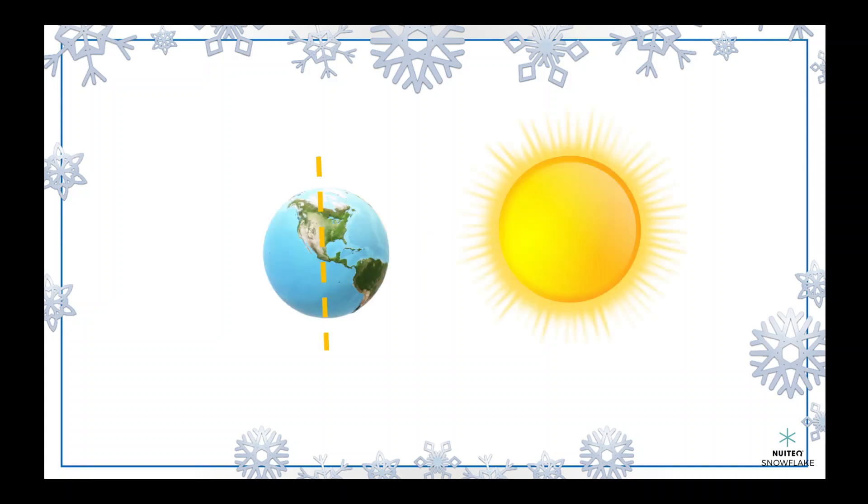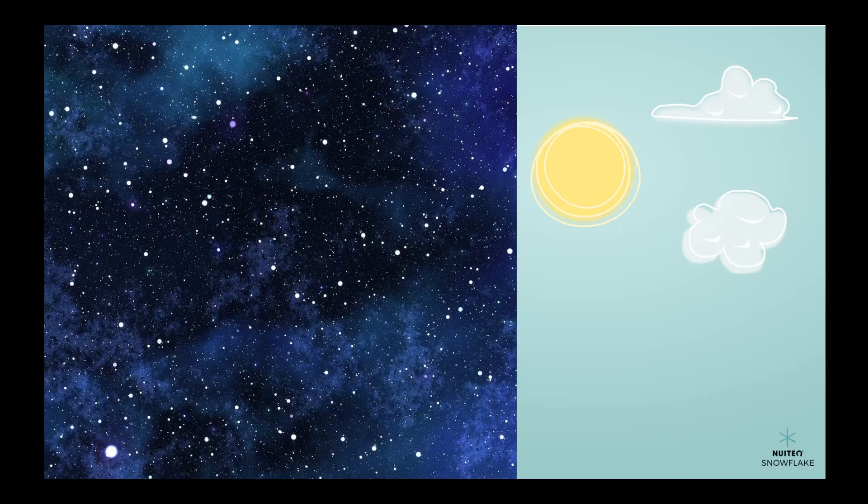Finally, we have winter. This is the season when the weather gets very cold and the days are short. During winter, the earth is tilted away from the sun, which means that the northern hemisphere gets very little sunlight. This is why we have shorter days and longer nights during the winter months.